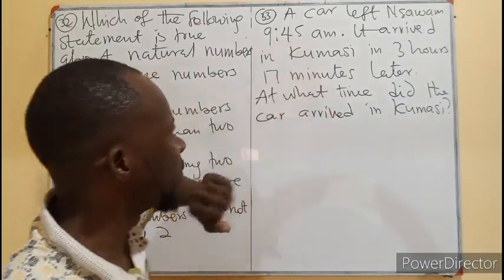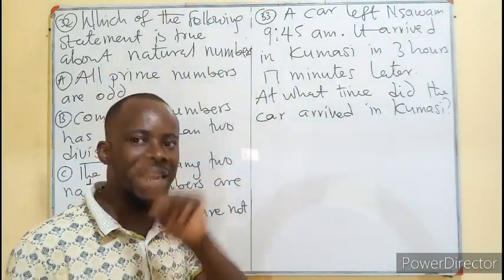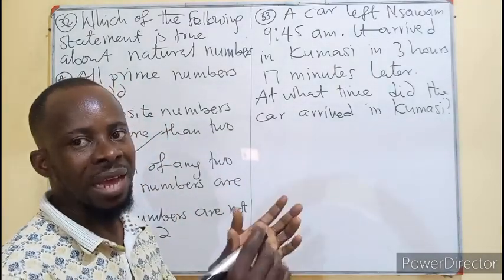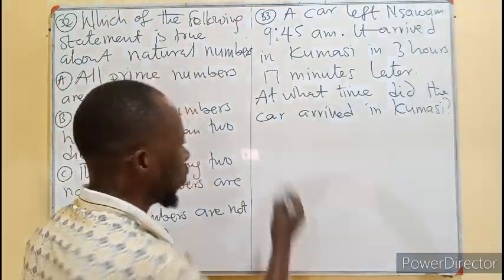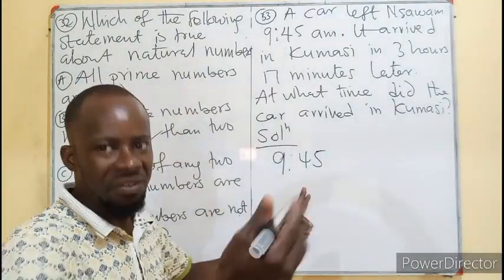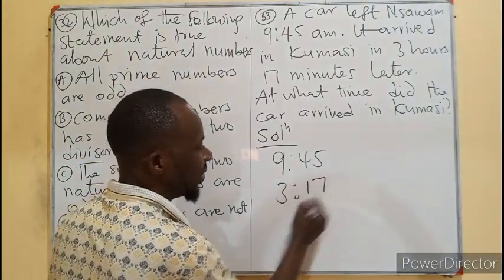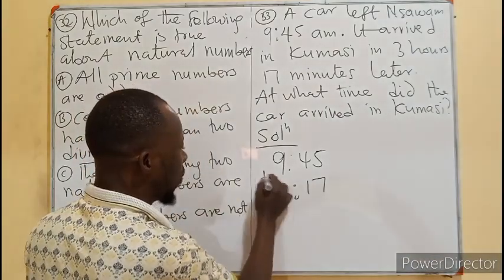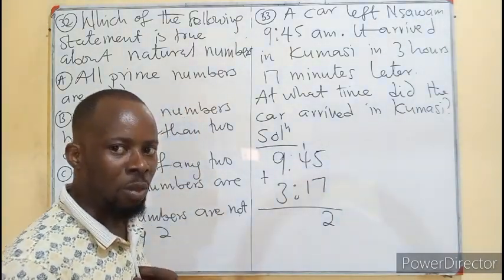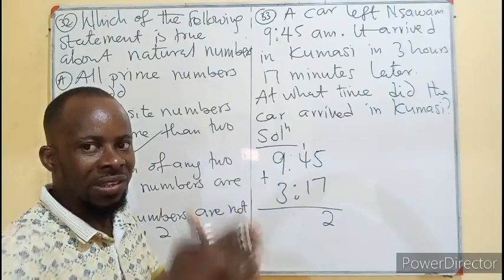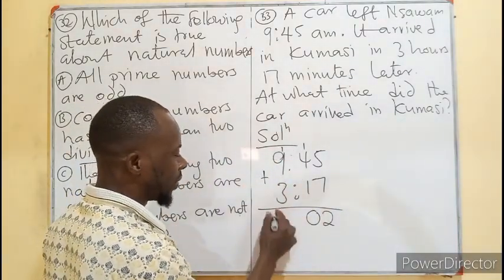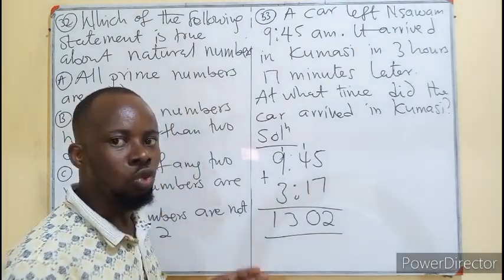A car left Samwam at 9:45 AM and arrived in Kumasi 3 hours 17 minutes later. What time did the car arrive in Kumasi? This is a typical addition of hours and minutes. We know 9:45 is also 9 hours 45 minutes. Adding 3 hours 17 minutes: 5 and 7 give us 12, a remainder of 1. So 1 plus 4 plus 1 is 6, which makes 60 — meaning it gives you an extra hour. So you write 0, remainder 1. That gives 10 plus 3 equals 13. So 13:02 in 24-hour time.